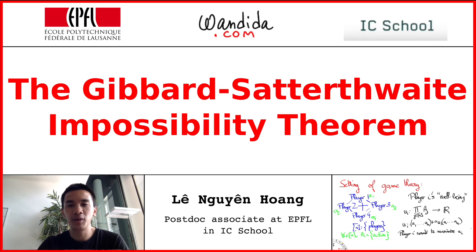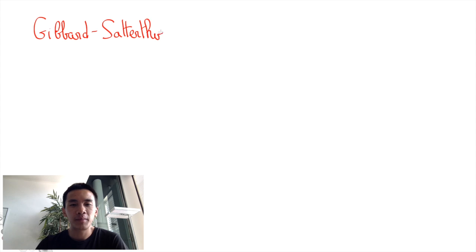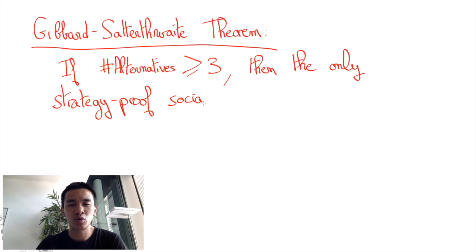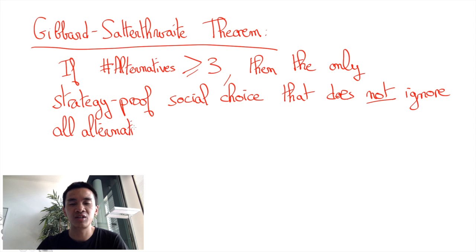In this video, I'll present the Gibbard-Satterthwaite Theorem without proof. Informally, the theorem asserts that when there are at least three alternatives, the only incentive-compatible social choice that does not ignore all alternatives but two is dictatorship.